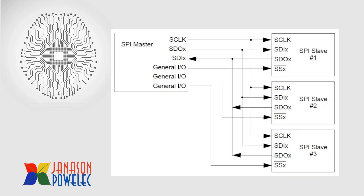Let us see the connection diagram for SPI. SPI needs a clock — CLK is the clock source. SDO is data output and SDI is data input. Three general purpose IOs are used for chip select. We can select SPI slave one, communicate, finish the data transfer, deselect it, then select SPI slave three and do the data transfer. In this way, we can communicate with a few devices using SPI.